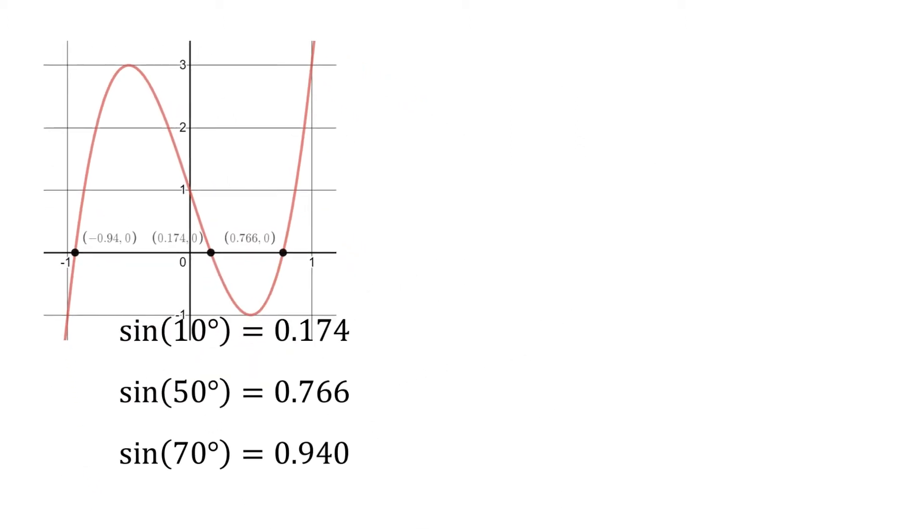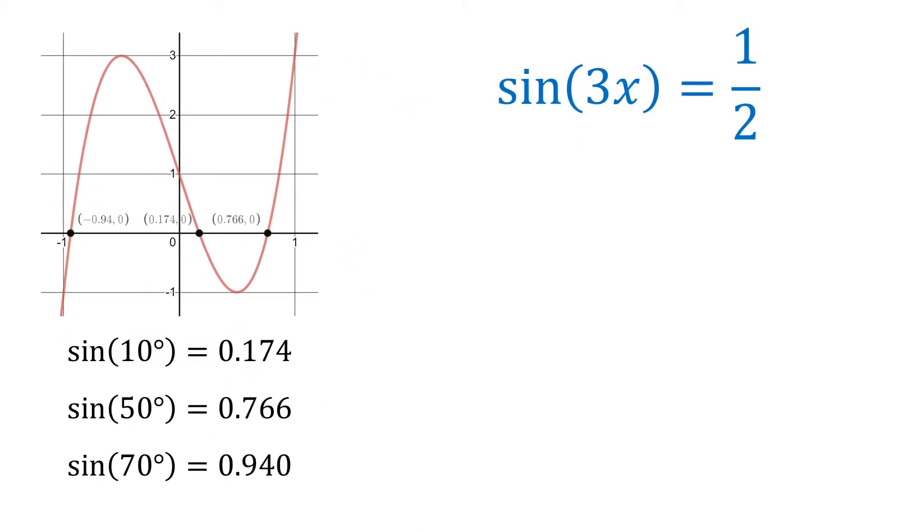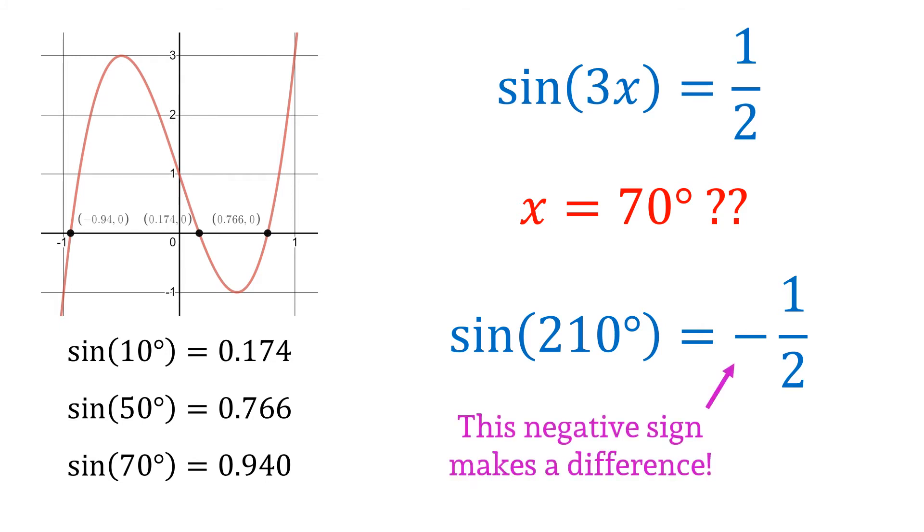Well, they seem like they could be values for the sine of 10, the sine of 50, and the sine of 70 degrees, at least the first few digits. But can we really be sure? Let's revisit our initial equation, the sine of 3x equals one half. Well, when x was 10 degrees, we saw that the sine of 30 degrees was indeed one half. Well, what about 50 degrees? A quick substitution shows that this works as well. Interesting. Well, what about this other rascal, this 70 degrees? Plugging this in gives us the sine of 210 degrees, which is actually negative one half. I bet this negative sign makes a difference.